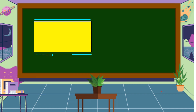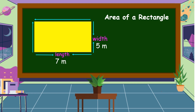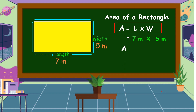Suppose that the length of this rectangle is 7 meters and the width is 5 meters. The formula for finding the area of a rectangle is: Area is equal to length times width. So the length is 7 meters and the width is 5 meters. 7 meters times 5 meters is equal to 35 square meters. This is the area of this rectangle.